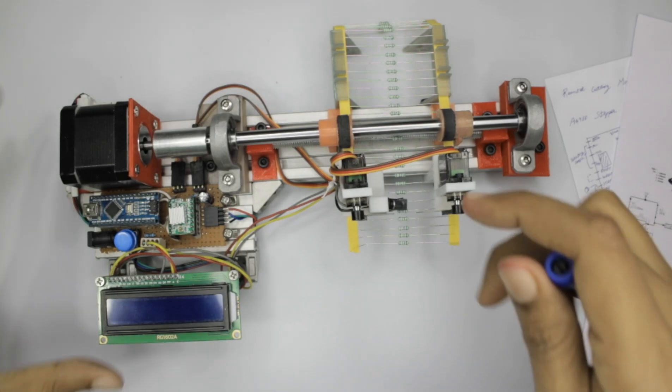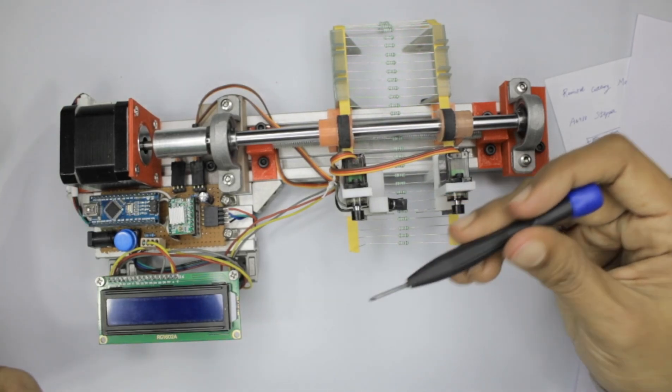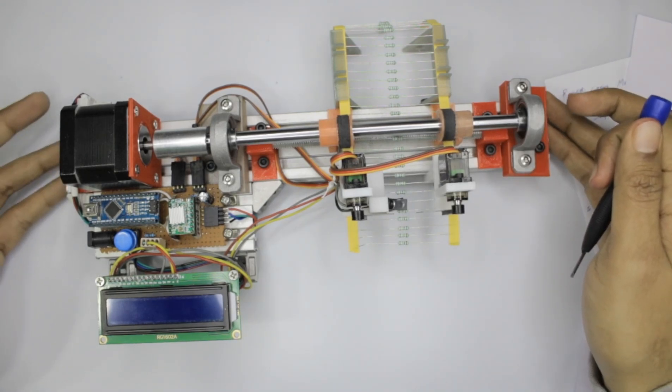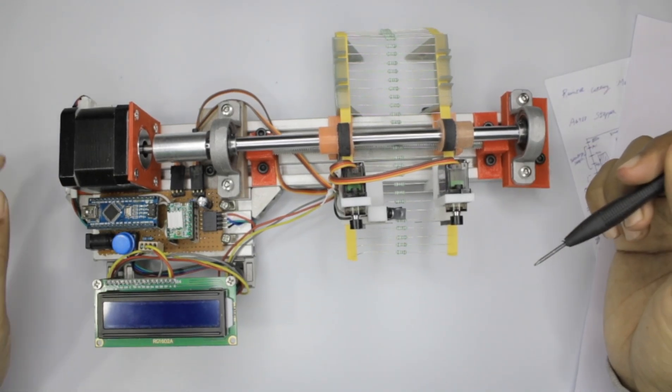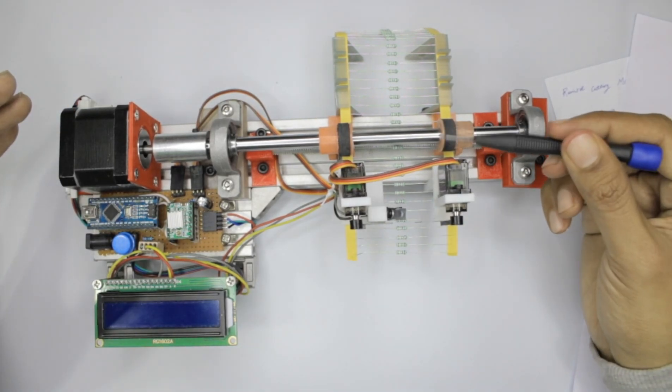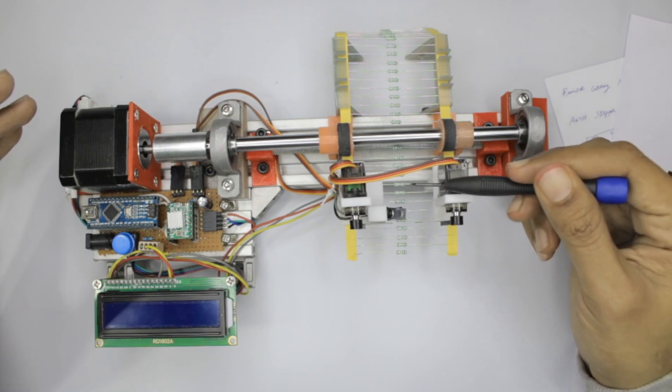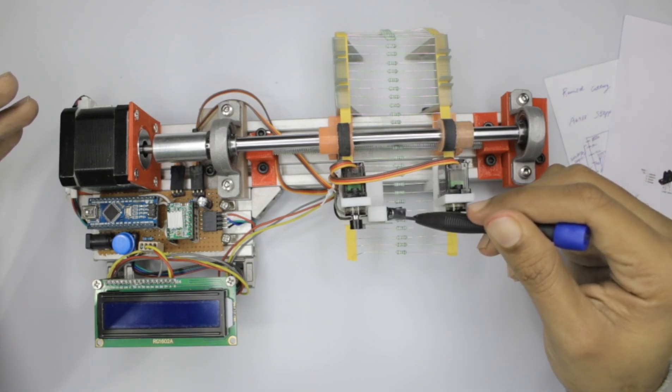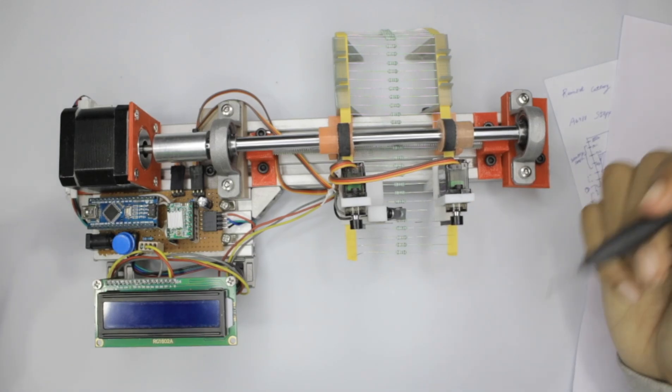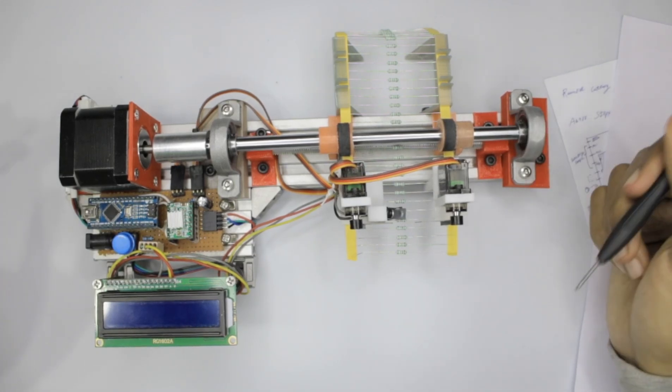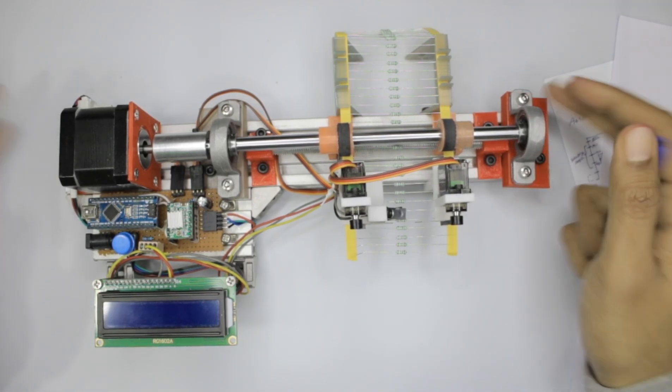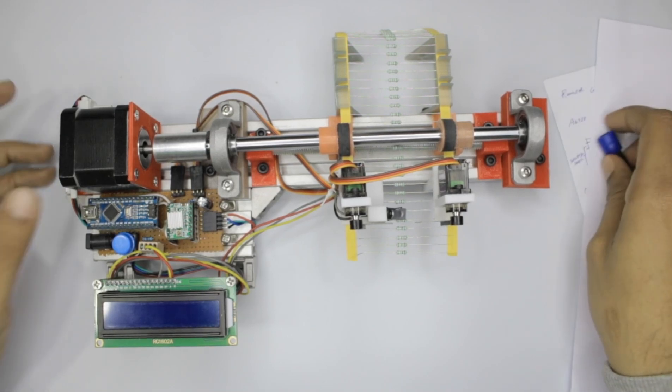As far as the code is considered, it is very simple. I will be explaining the code completely on the documentation. Basically what the code does is once you start the machine, it will count the number of resistors passing through this phototransistor and then chop the resistor when the required number have passed. The complete explanation for the code, schematics, and STL files - everything can be found at the link given in the description of this video.